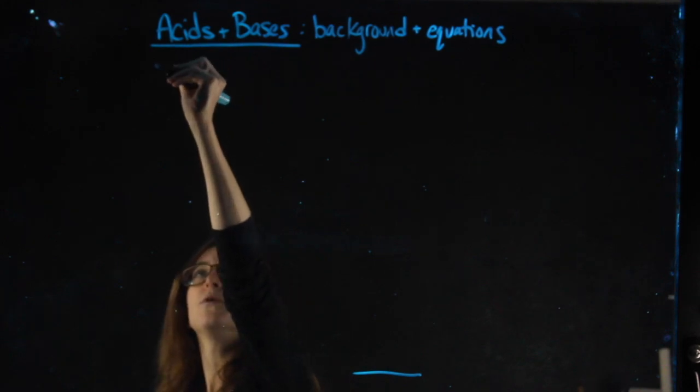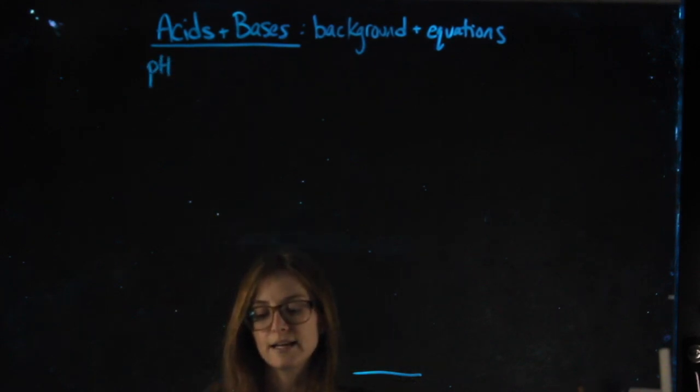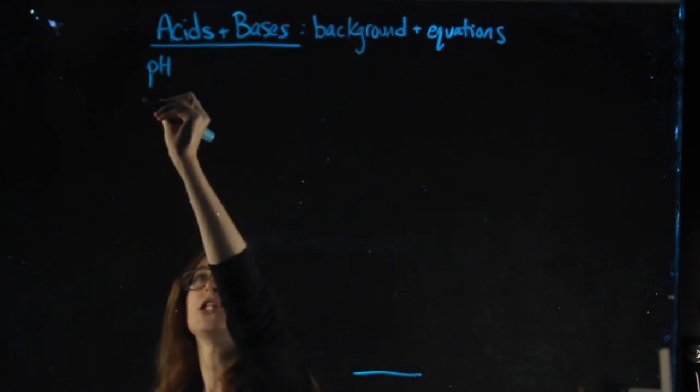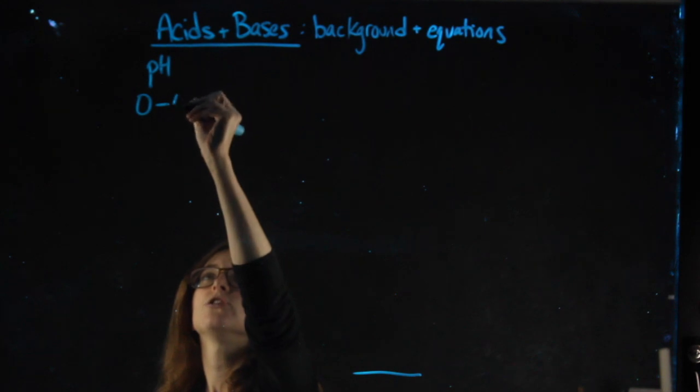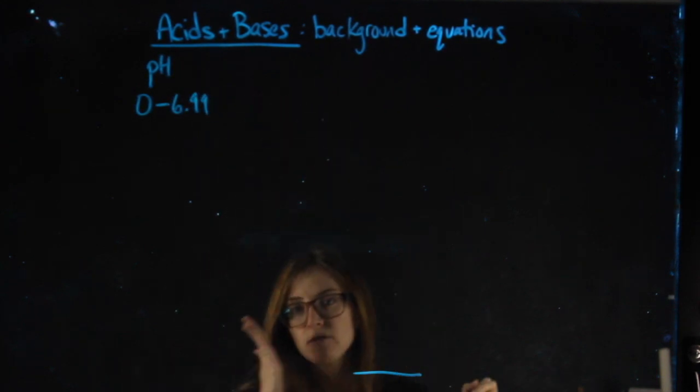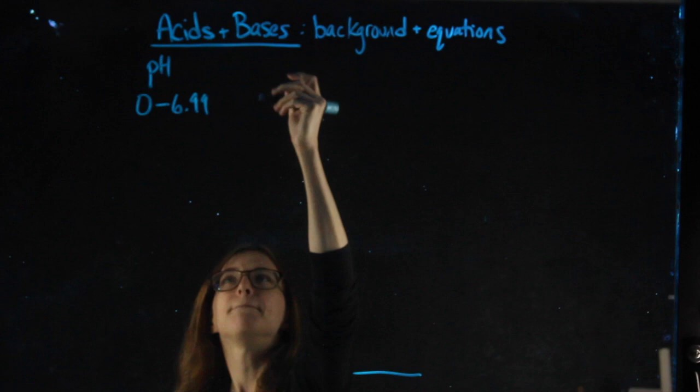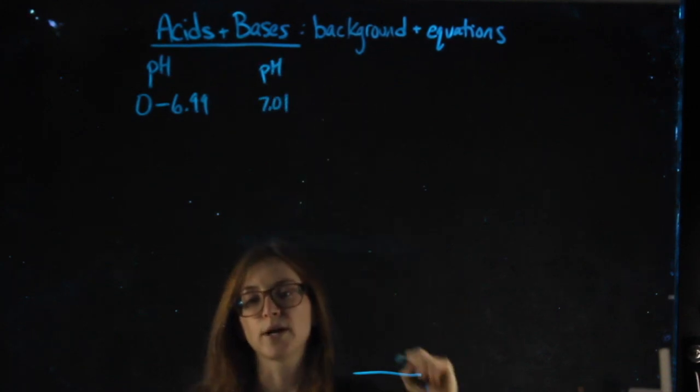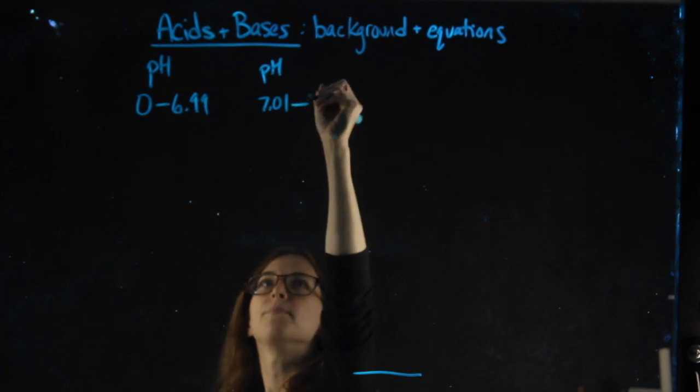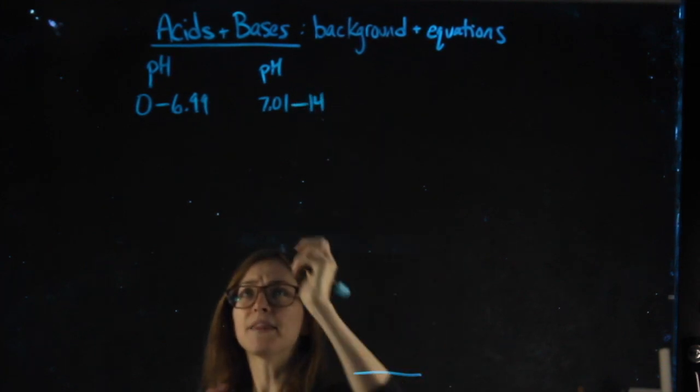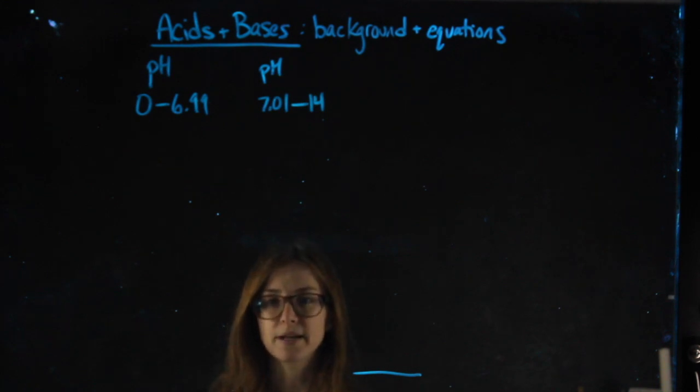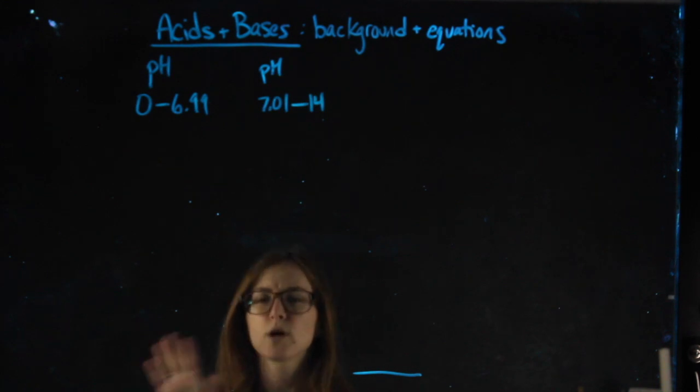People will tell me that acids have a pH, they'll say less than 7 normally. Acids have a pH anywhere from 0 to 6.99, really right up until 7. Bases will have a pH above 7, so 7.01 all the way up to 14. And then right at 7, you'll notice 7 is missing. 7 is what we would consider something that's neutral. We'll come back to that in a second.